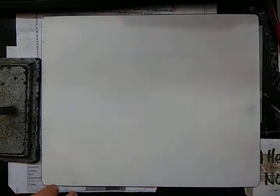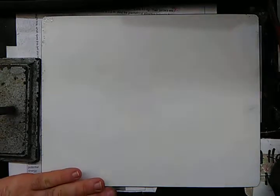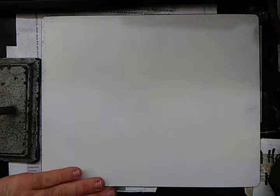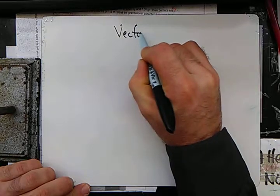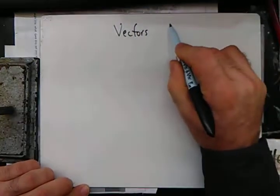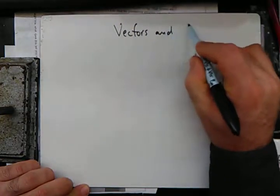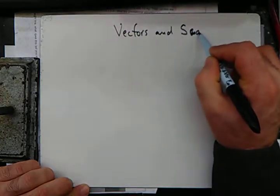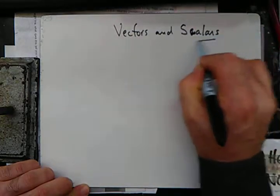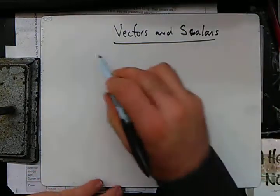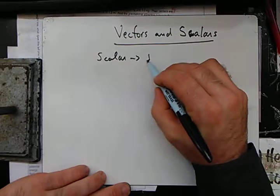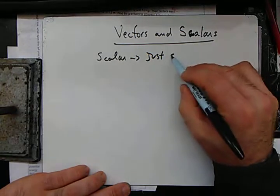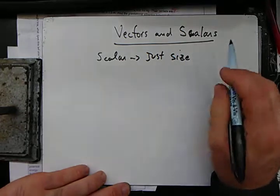So as we're talking about displacement having a direction, there are some quantities, if you look at the notes, that are called vectors, and there are some quantities called scalars. So a scalar is just size, just size.